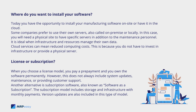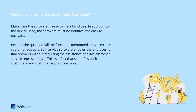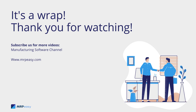When you choose a license model, you pay a prepayment and own the software permanently. However, this does not always include system updates, maintenance, or customer support. Another alternative is subscription software, also known as software as a subscription. The subscription model includes storage and infrastructure with monthly payments, and version updates are also included. Make sure the software is easy to install and use — it must be intuitive and easy to navigate. Besides the quality of all the functions mentioned, ensure customer support. Self-service software enables the end user to find answers without requiring the assistance of a live customer service representative, simplifying both customers and support services.